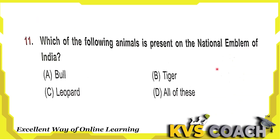Next question: which of the following animals is present on the National Emblem of India? Option A is Bull. Option B is Tiger — Tiger is the National Animal of India, but it is not on the National Emblem. Option C is Leopard. Option D is all of these. On the National Emblem there are only four animals: Elephant, Horse, Bull, and Lion. So the right answer is option A — Bull is present on the National Emblem.